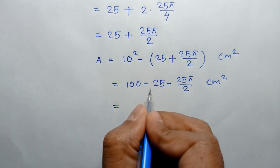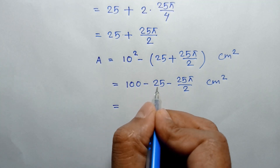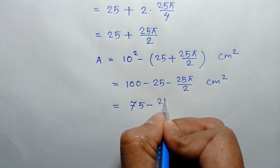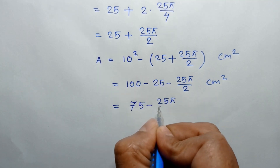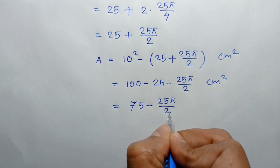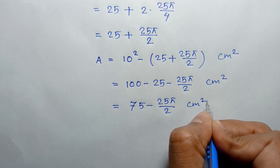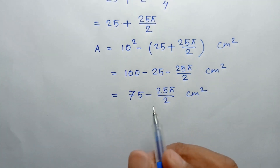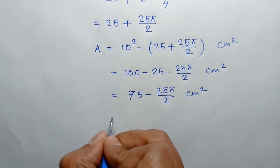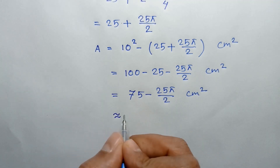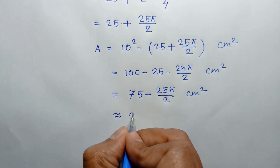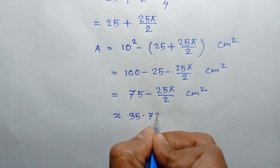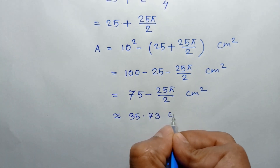This equals 100 minus 25, which is 75, minus 25π over 2 square centimeters. So this is the area of region A. The approximate value of this area is 35.73 square centimeters.